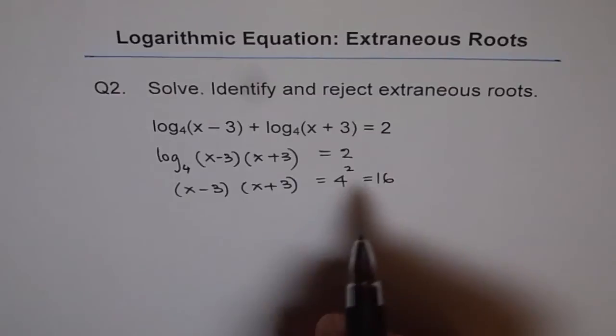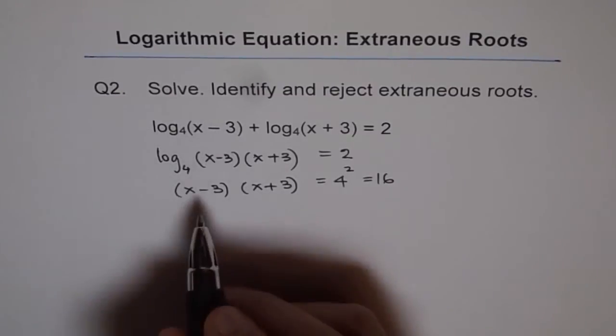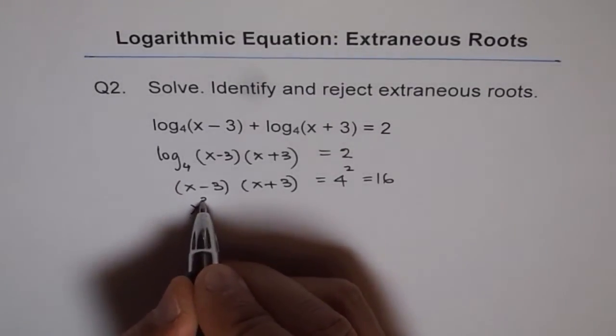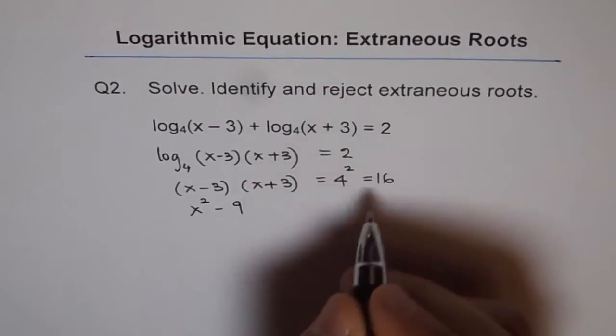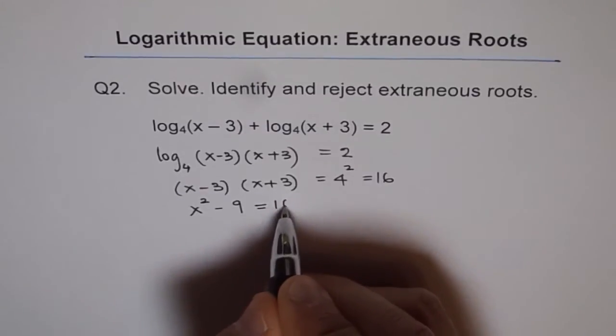Let's bring all the terms together to form a quadratic equation and solve it. So (x - 3)(x + 3) will be x² - 9. Let's keep 16 on the right side itself.